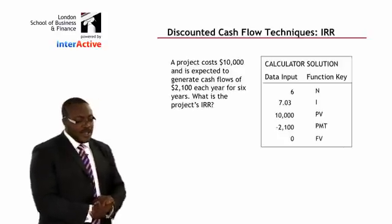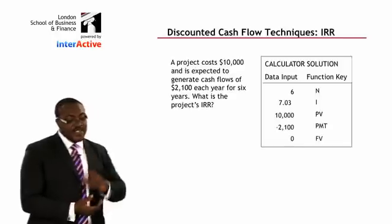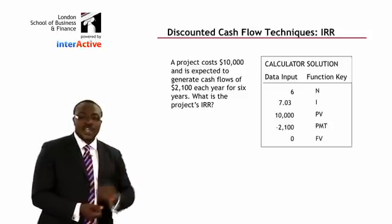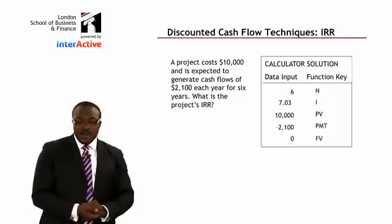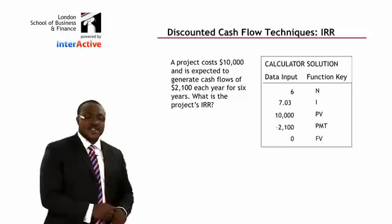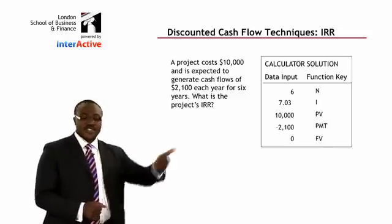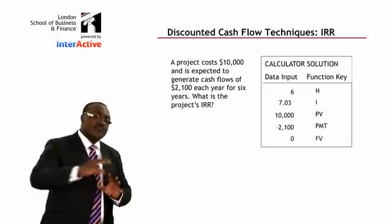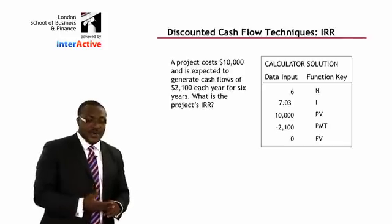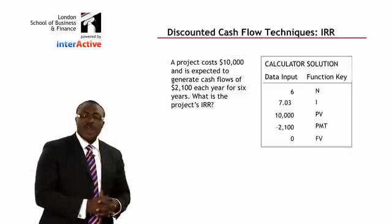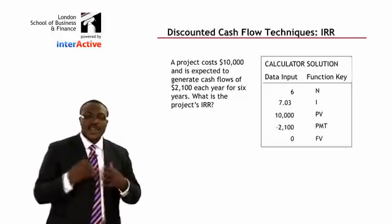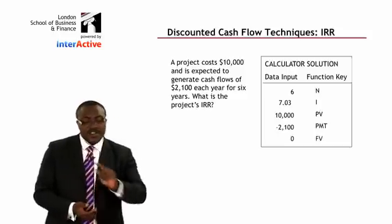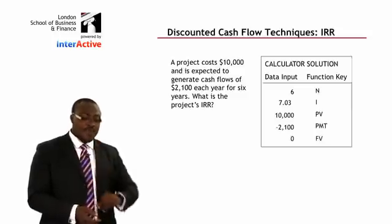Here's an example: a project costs $10,000 and is expected to generate cash flows of $2,100 each year for six years. What is the project's internal rate of return? Using a finance calculator, set N to 6, present value to $10,000, payment to $2,100, and future value to zero. Computing I/Y gives 7.03%. The project's IRR is 7.03%. If the company's cost of capital is less than 7.03%, proceed; but if it's 10%, the project should not be undertaken.